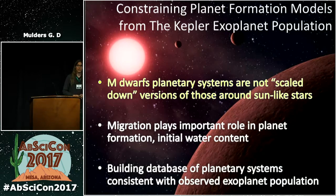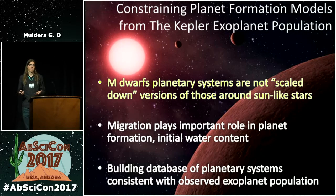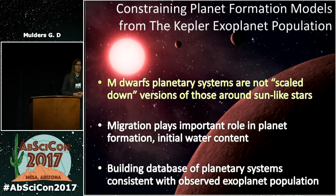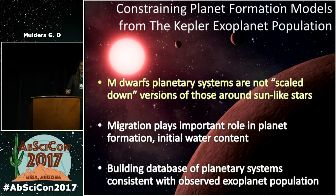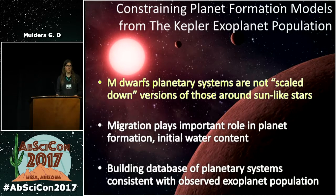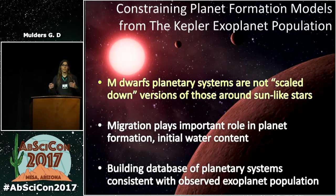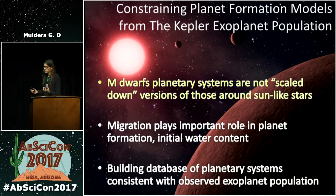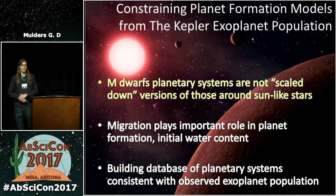Coming to the end of my talk: constraining planet formation models by taking into account the observed exoplanet population is our key goal. M dwarf planetary systems are quite different from those around sun-like stars — they're not simply scaled-down versions, and additional planet formation mechanisms may alter the composition of planets that form. In particular, if planet migration plays an important role, these planets might have a very different composition than if they formed more locally in the disk. We're building a database of planetary systems with both formation histories to see how well they match observed populations and make predictions for planetary compositions. Thank you very much.